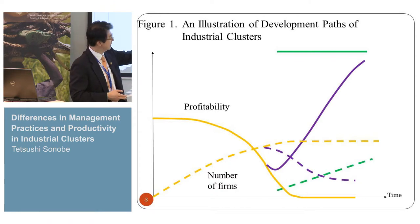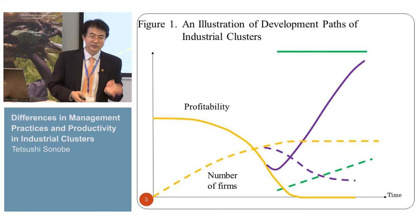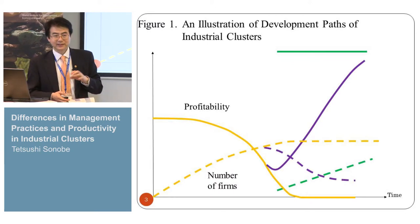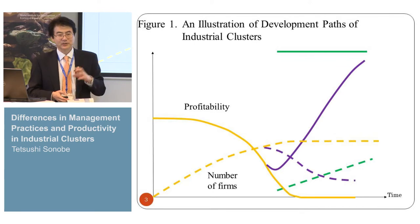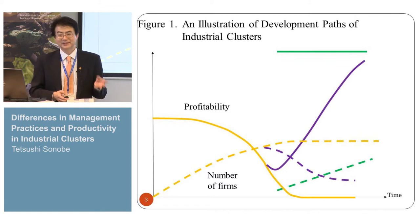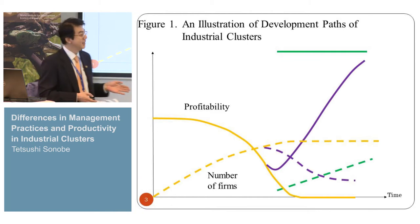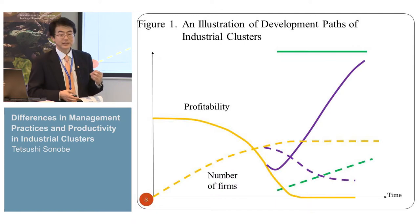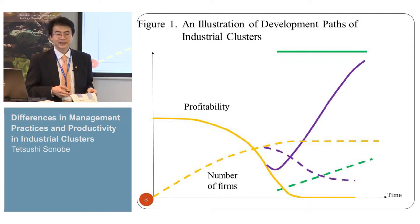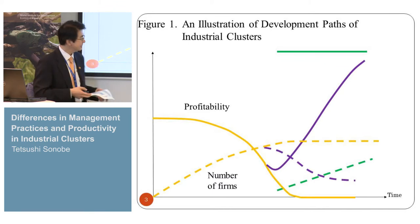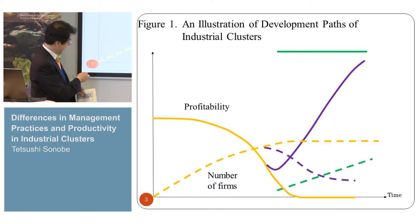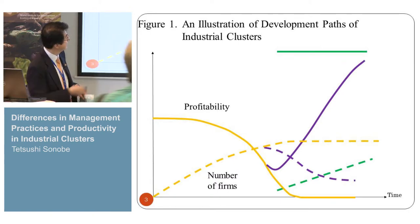In the V-shaped path, producers recognize the declining profitability and try to improve the quality of products. But they have to distinguish their products from inferior quality products, so they try to establish a brand name. But brand names may be stolen, so they need to develop their own distribution network and marketing strategies. If successful, the business expands rapidly. But then they need management — they have to learn a lot of new things, and learning from abroad is very important.